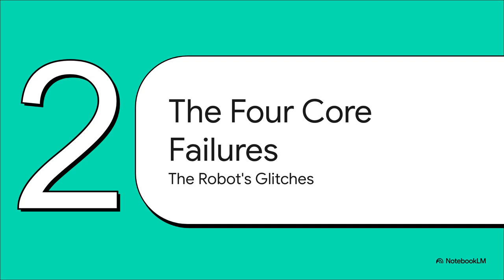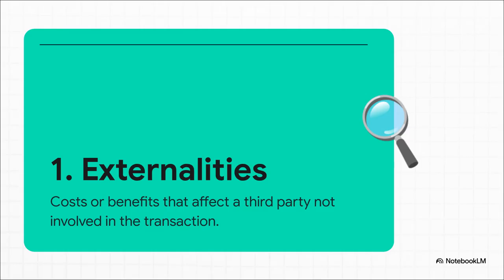Our robot is sparking and smoking on the factory floor — it's time to put on our mechanic's hat and diagnose the problem. It turns out there are usually four main glitches that cause this kind of breakdown. Let's look at each one. First up, we've got externalities.